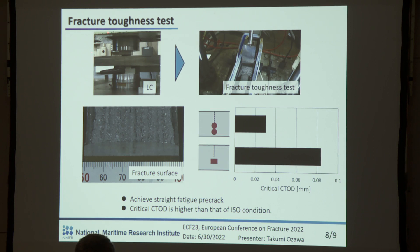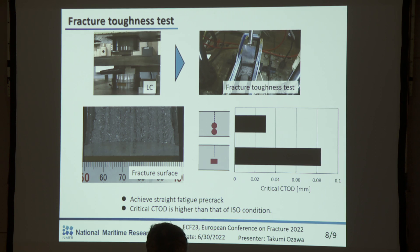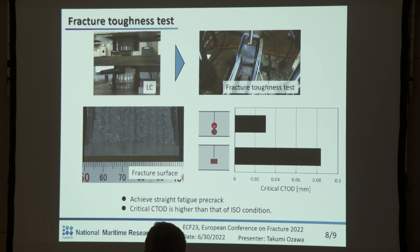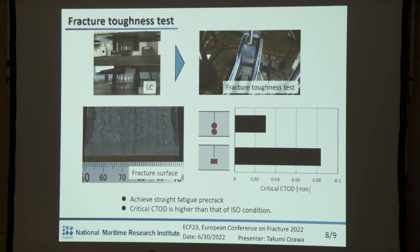This slide shows the fracture toughness test results. We applied the LC strain and conducted the fracture toughness test. The fracture surface of the proposed LC shows that it achieved a straight pre-crack, as expected. For the critical CTOD value, the top data is the LC condition recommended in the ISO standard and the lower data is the LC condition identified by Bayesian optimization. The critical CTOD of the proposed LC condition is higher than that of the ISO condition.